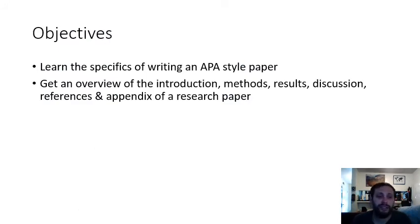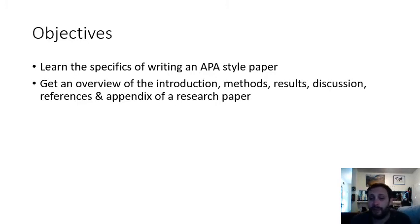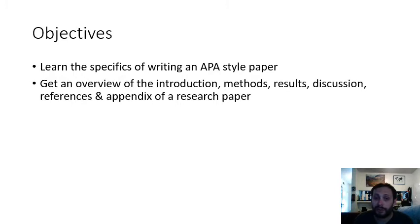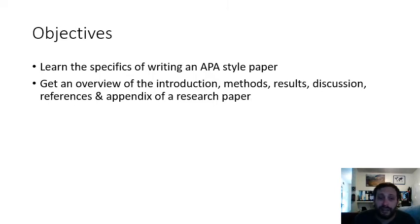Our objectives for Unit 8 are to learn the specifics of writing an APA style paper, and to get an overview of introduction, methods, results, discussion, references, and appendix — all necessary components of a full research paper. However, for this class, the only parts you will be writing are an introduction, a methods section, and a references section, and potentially an appendix section, though chances are your paper will not require one.